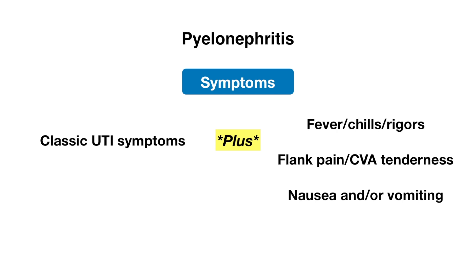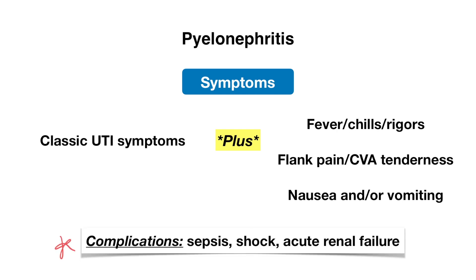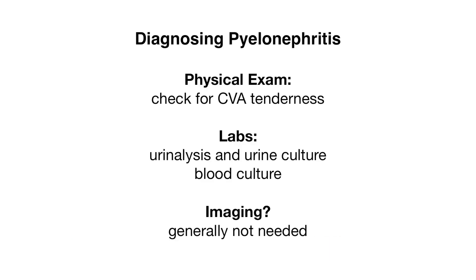Pyelonephritis needs to be taken very seriously and treated promptly because it can lead to various complications ranging from sepsis with or without shock, as well as acute renal failure. On physical exam, you can check for CVA tenderness, which will often be present. Lab findings that can help with diagnosing pyelonephritis include a urinalysis and urine culture, as well as blood culture.